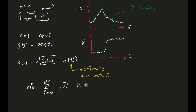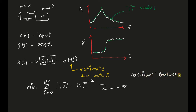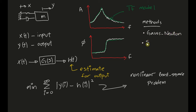To do this, we have to solve a minimization problem: we minimize the difference between the estimate and the actual output. This turns out to be a nonlinear least squares problem, which is fairly difficult to solve, but there are established methods. These include the Gauss-Newton method, the Steiglitz-McBride method, and the Levenberg-Marquardt method.